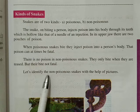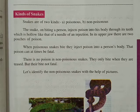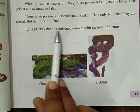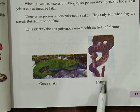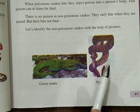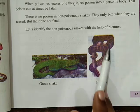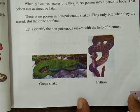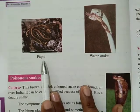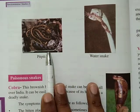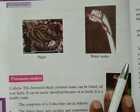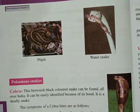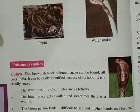Let's identify the non-poisonous snakes with the help of pictures. Yahan par non-poisonous snakes ko identify karte hain. First one is a python — python mein bilkul bhi zeher nahin hota, yeh non-poisonous hai. Second one is a green snake. Next are pit viper and water snake — pit viper mein bhi bilkul poison nahin hota. Water snake mein bhi poison nahin hota; iske kaatne se thode samay ke liye fever aa sakta hai. So they all are non-poisonous snakes.